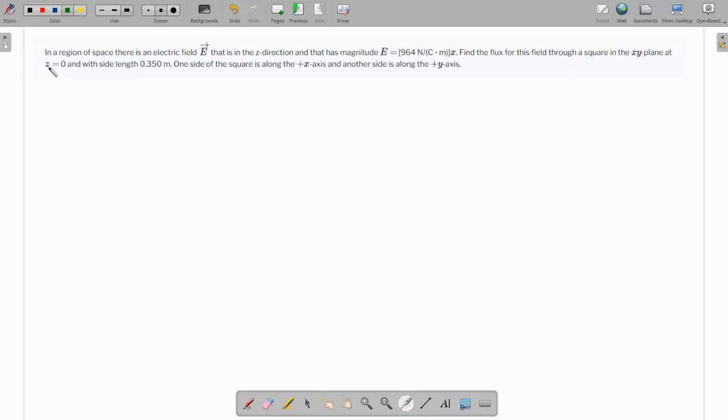This question gives us a little bit of imagination about the direction. In a region of space there is an electric field E towards the Z direction and has a magnitude which depends on X.